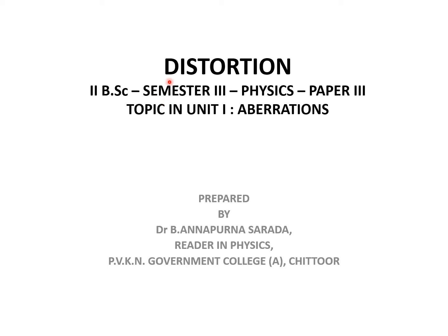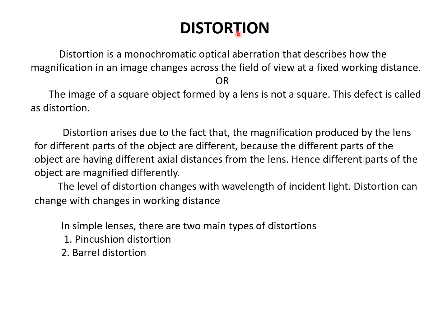In this lecture, I am going to discuss about distortion, which is a topic in the unit aberrations of 2nd DSE, semester 3, physics paper 3. Distortion is a monochromatic optical aberration that describes how the magnification in an image changes across the field of view at a fixed working distance. Alternatively, the image of a square object formed by a lens is not a square — this defect is called distortion.